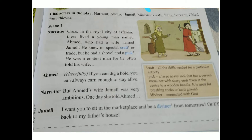Narrator: But Ahmed's wife Jamil was very ambitious. One day she told Ahmed: 'I want you to sit in the marketplace and be a diviner from tomorrow, or I will go back to my father's house.' So there was a royal city called Isfahan, and in that city a young man named Ahmed and his wife Jamil lived.